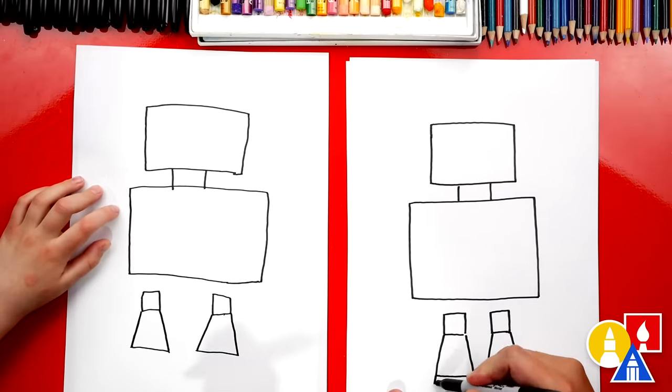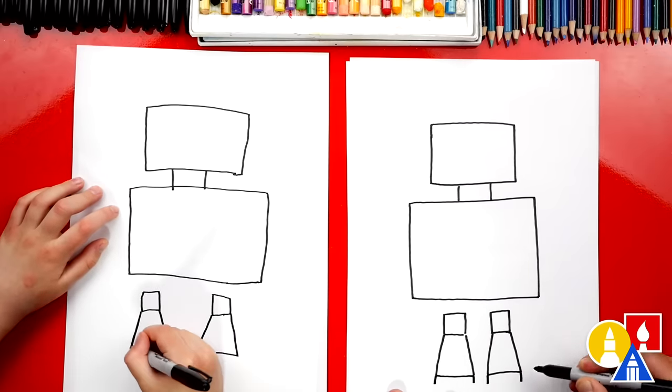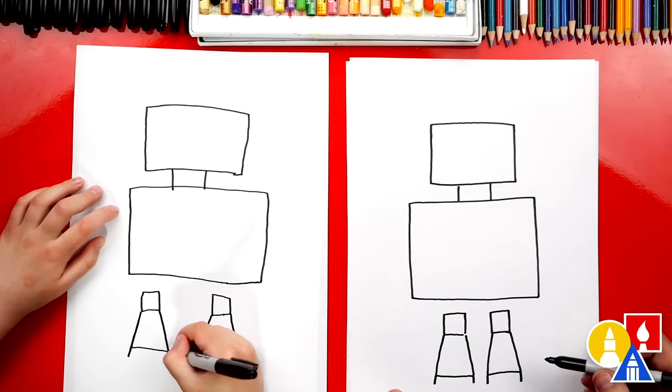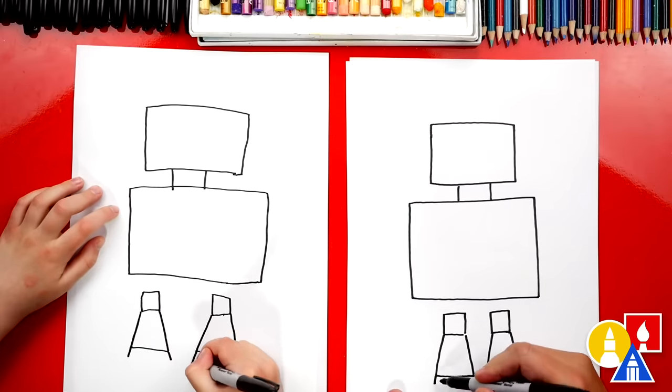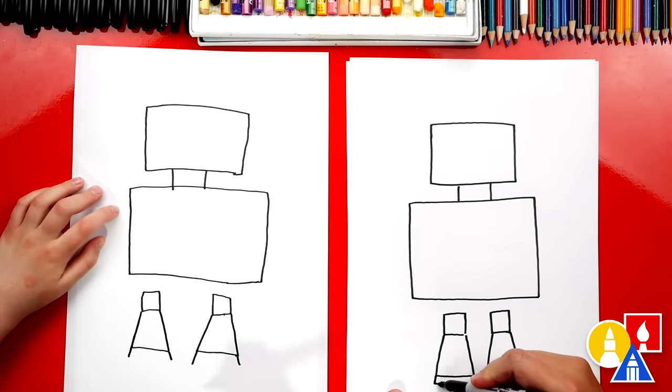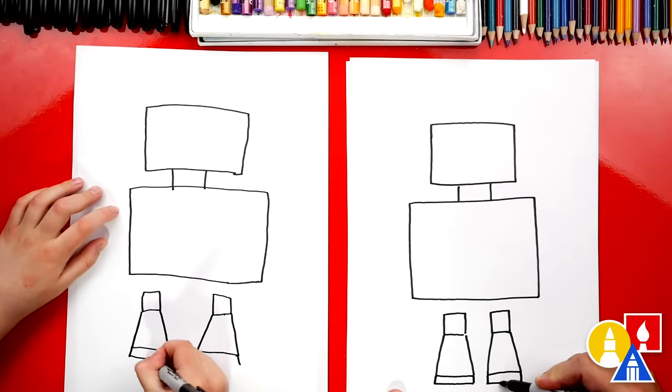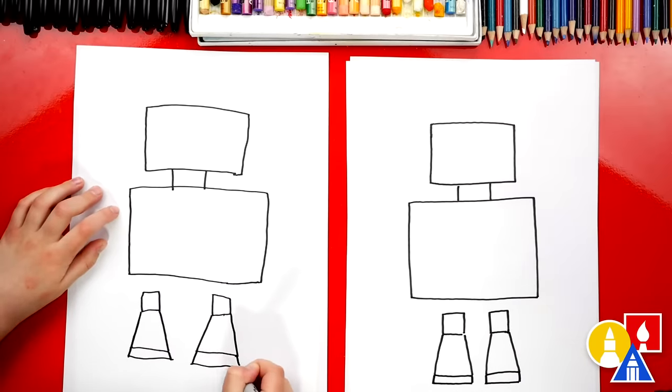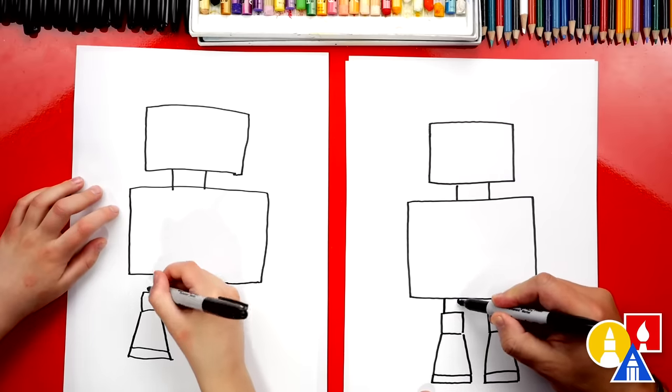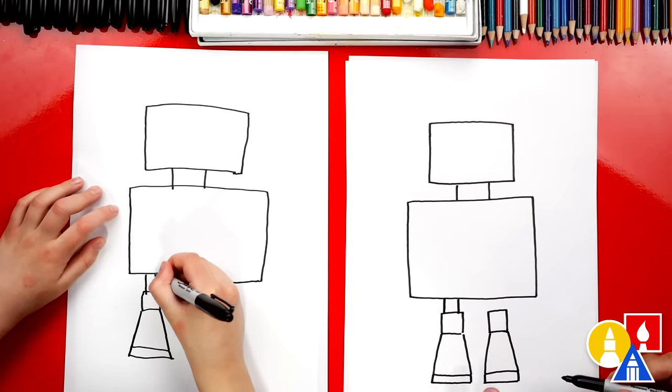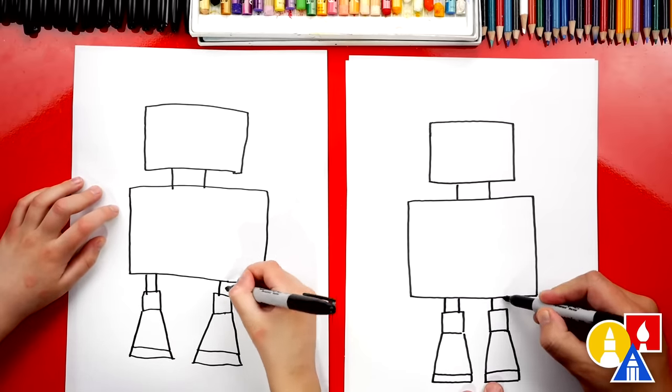Then let's add a small rectangle shape on the bottom of the feet. So we'll draw two short lines down and then we can connect those two lines together also. Let's draw the top of the legs. We'll draw two lines connecting the knee to the body. Do the same over here.